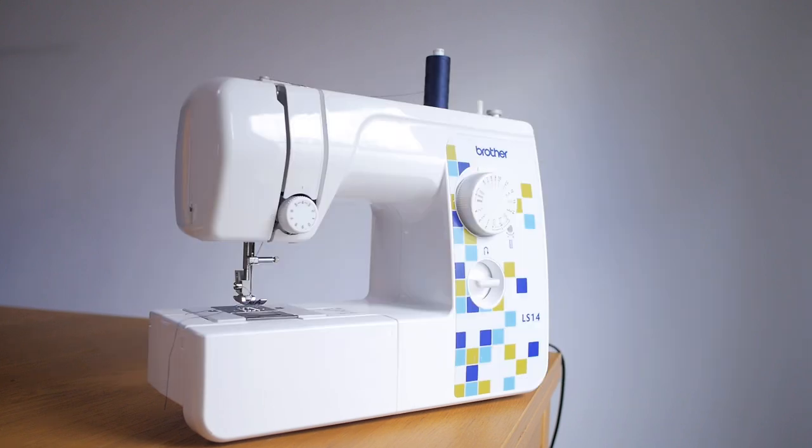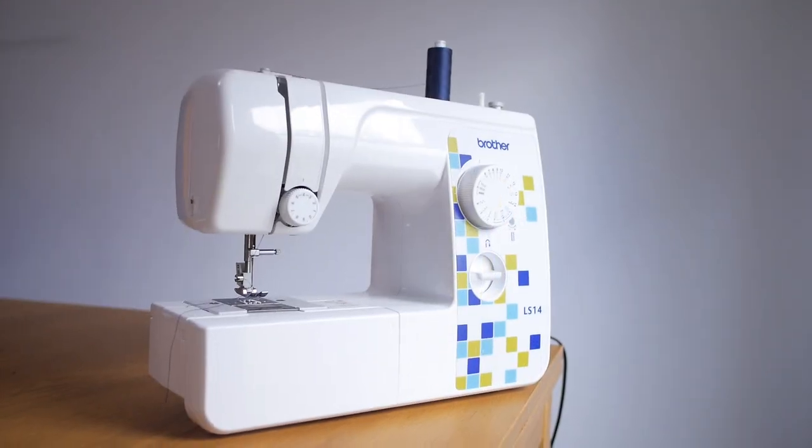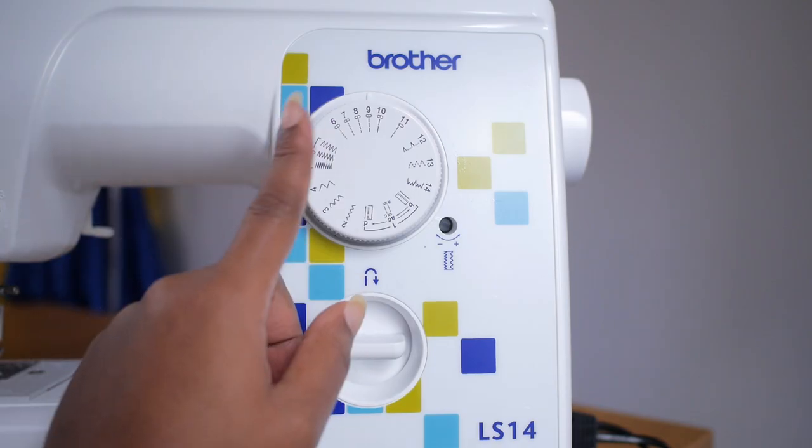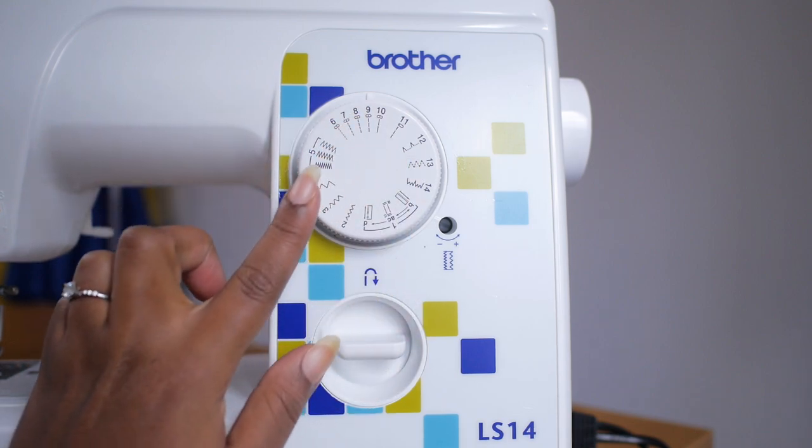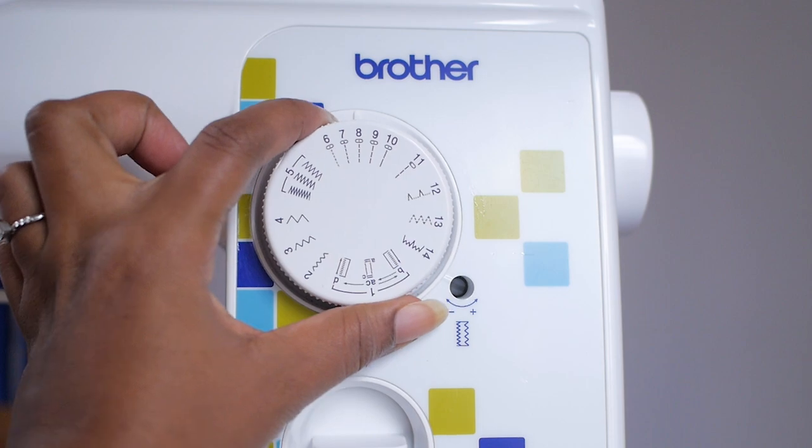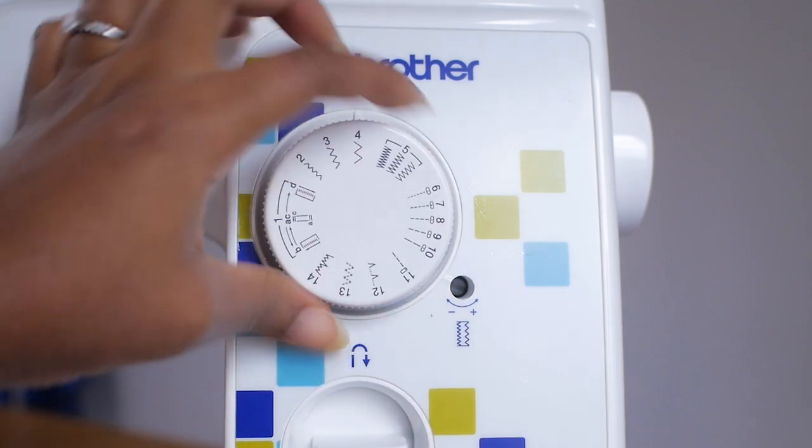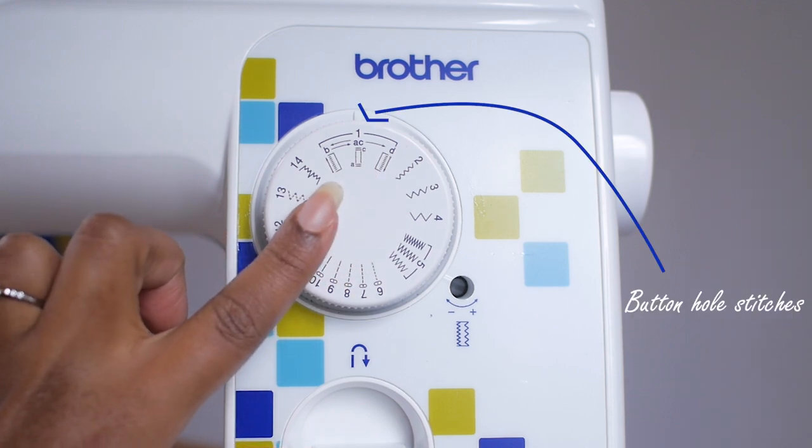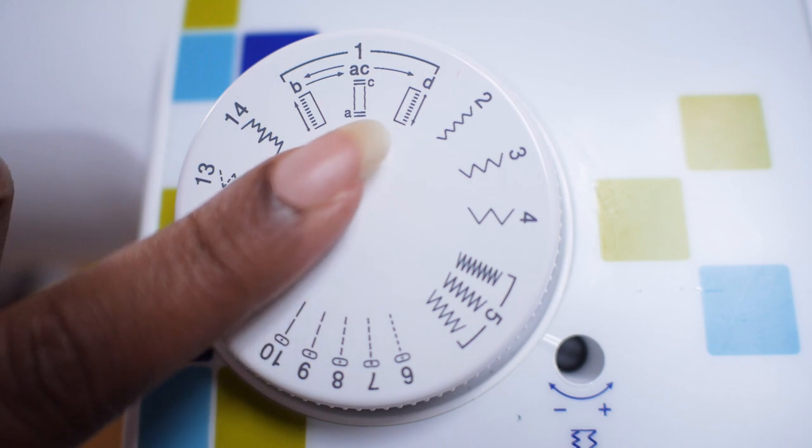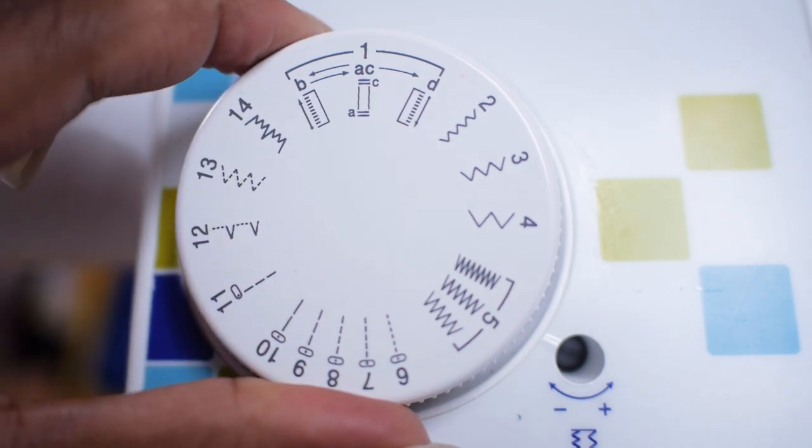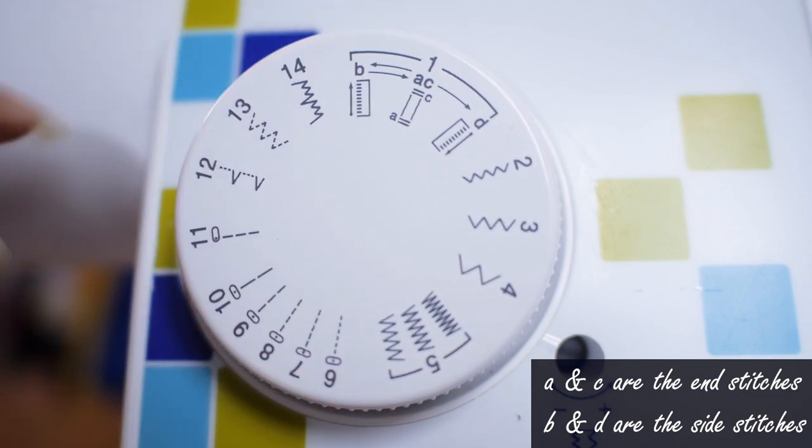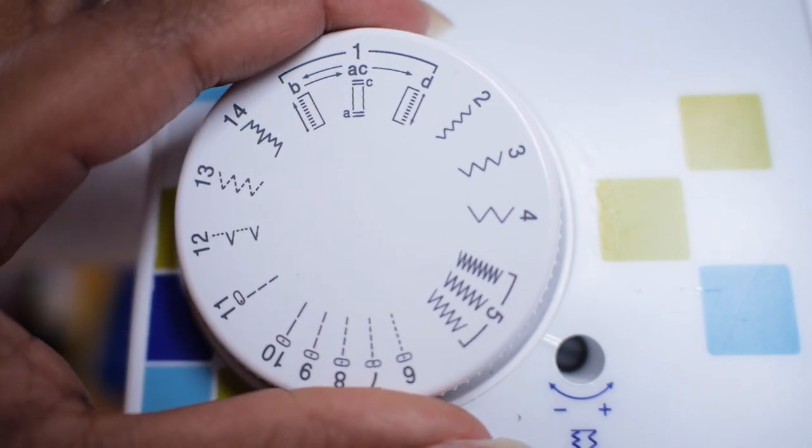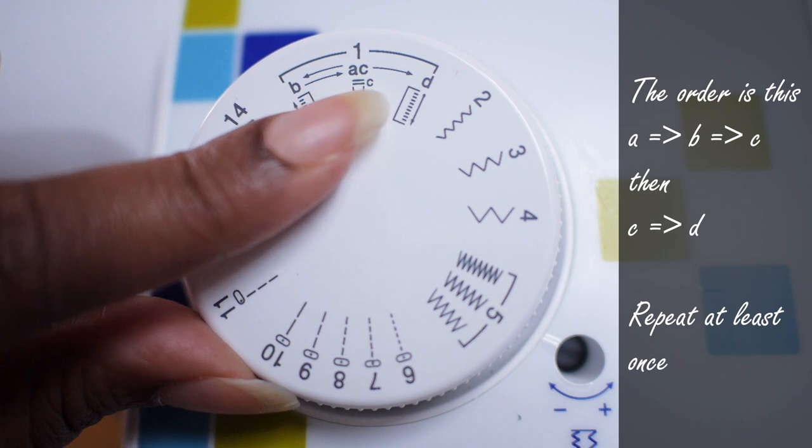I'm going to be using my trusty old Brother LS14 sewing machine to demonstrate how to create a buttonhole using a domestic machine. If you have a similar model and make, you should have a knob that has these types of stitches. So the stitches I want to look out for are like a set of three. You have one that is the top and the bottom which is your A and C, and then you have your sides which is your B and your D. So the B is for the left hand side and the D is for the right hand side, and the A is for the bottom and the C is for the top. So the way it works is you alternate between these stitches to create the full rectangular shape of a buttonhole.